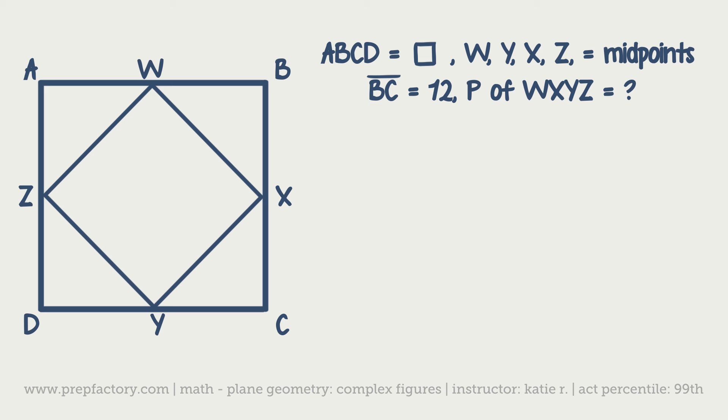W, Y, X, and Z, wrote that in a weird order, are midpoints. So for instance that means X is the midpoint of BC, Y is the midpoint of CD, etc. BC is 12 units long. What is the perimeter of WXYZ? Okay cool, that's a pretty standard problem.